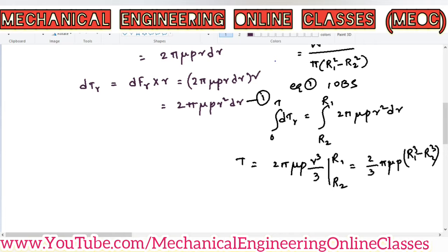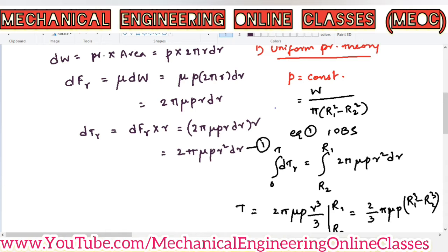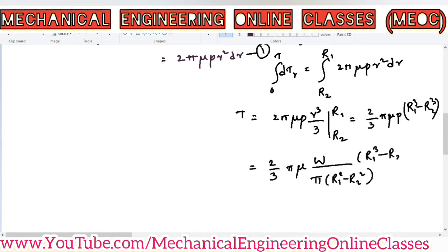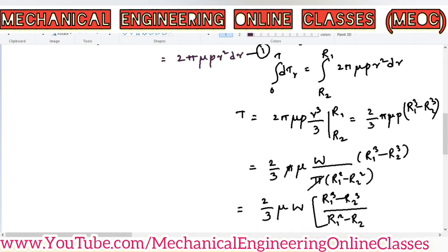Replacing P as W / (π(r1² − r2²)), we are left with T = (2/3) mu W × (r1³ − r2³) / (r1² − r2²). This is the torque transmitting capacity of a single plate clutch when we consider uniform pressure theory.